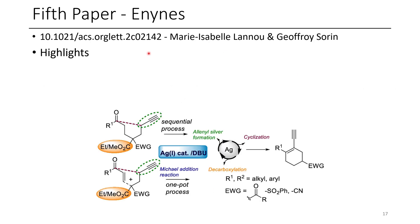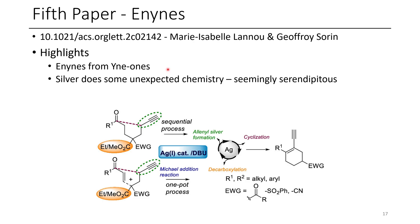The fifth paper for today is the synthesis of E9s from ynones. Some highlights of this paper include silver doing some unexpected chemistry, seemingly serendipitous. In their earlier work making furans, when their R1 group was an aromatic group, they tended to get furans. They had screened different groups at this position with two electron-withdrawing groups, and found that when they had two electron-withdrawing groups instead of something else like an oxygen, they would instead get this reaction. This is something that they discovered during their work on another project.